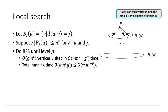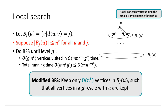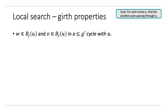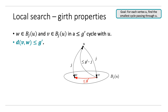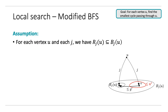But this assumption is not necessarily true — some of these sets might be large, like order N. The idea is to do BFS from all vertices in a way that we only keep order N to the t vertices in each level, such that all vertices in a small cycle with u are kept. To implement this idea, we observe: if there is a node v in level j of the BFS that is in a cycle of length at most g prime with u, and w is any other node in B_j, then the distance from v to w is at most g prime. This is by triangle inequality — we can go from v to u, then from u to w.